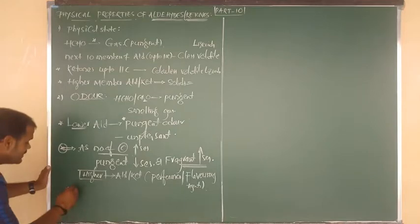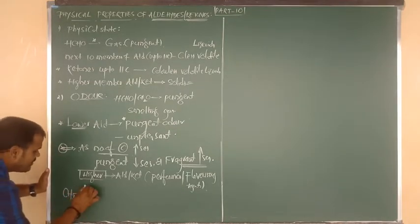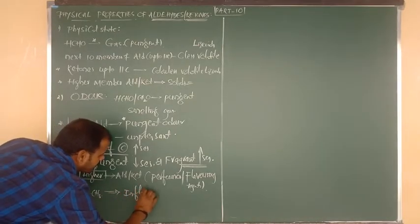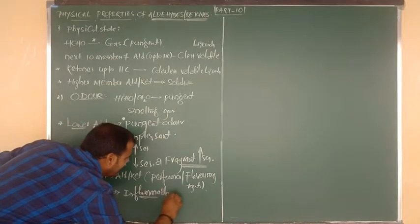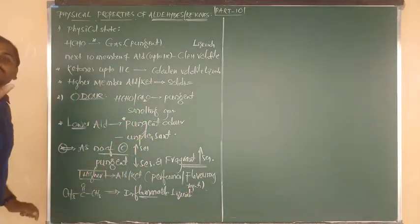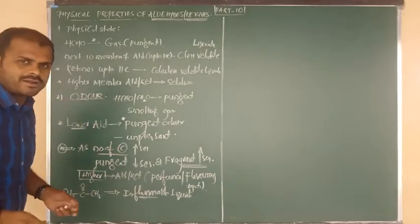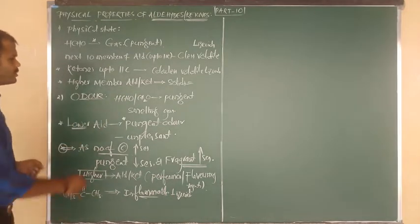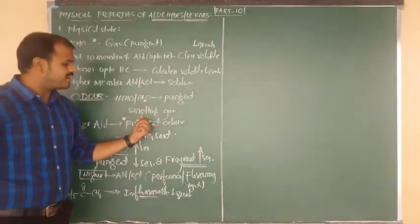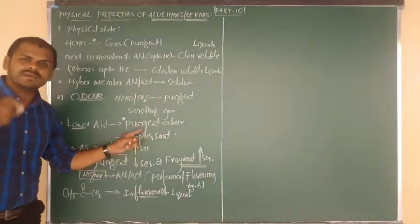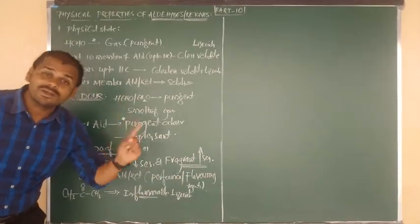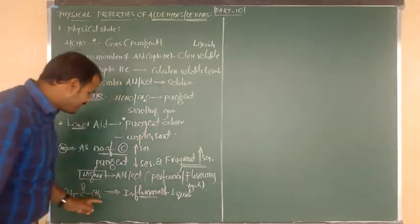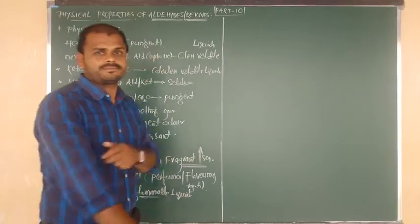One more special thing about acetone — formula CH₃-CO-CH₃. Acetone is a very special liquid; its nature is highly inflammable. It can easily catch fire and gives a very bright flame. That is the information about odor. To summarize: formaldehyde is a pungent smelling gas, lower aldehydes have unpleasant smell, higher members are used in perfumes, and acetone is highly inflammable.